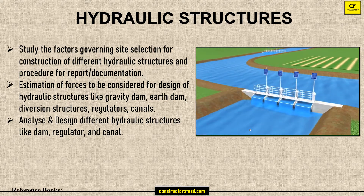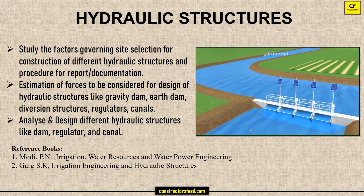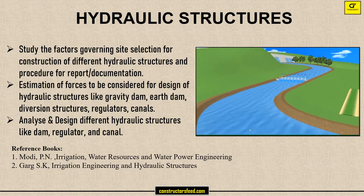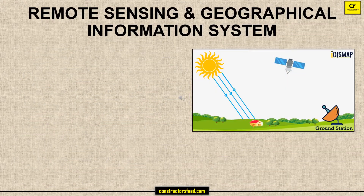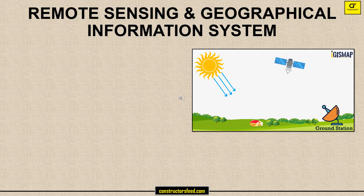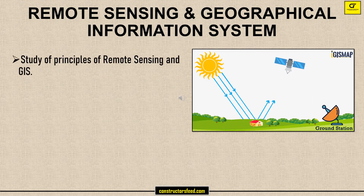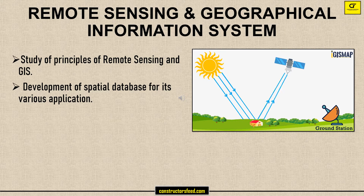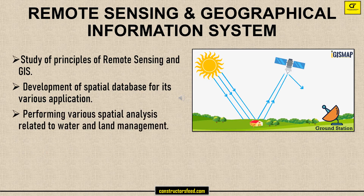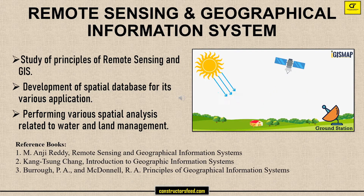These are the reference books. Remote Sensing and Geographical Information System: Study of Principles of Remote Sensing and GIS; Development of Spatial Database for its Various Applications; Performing Various Spatial Analysis related to Water and Land Management. These are the reference books.